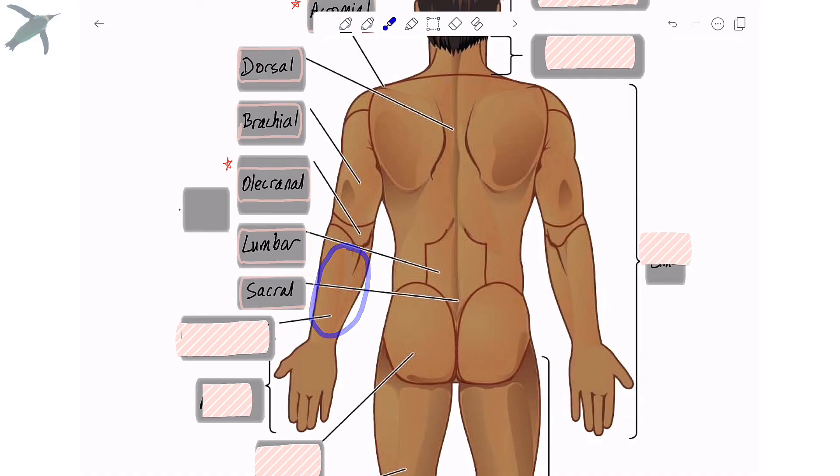All right, this region is the same as the anterior side. This is the antebrachial region. The entire region of the hand is referred to as the manual region. So you think about manual dexterity.